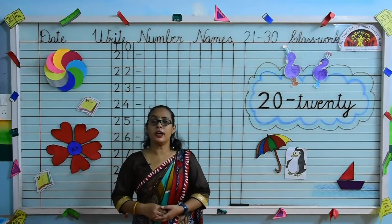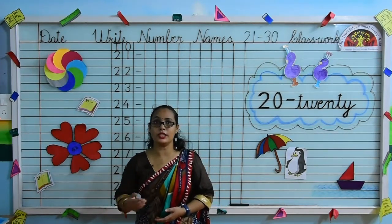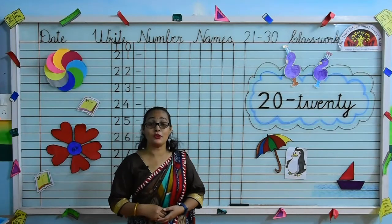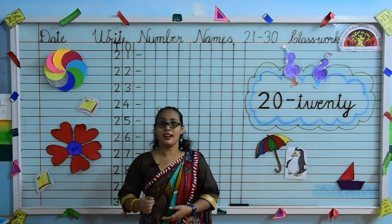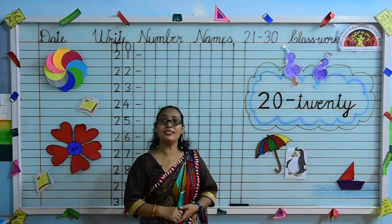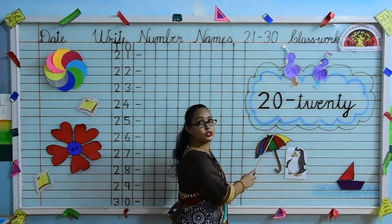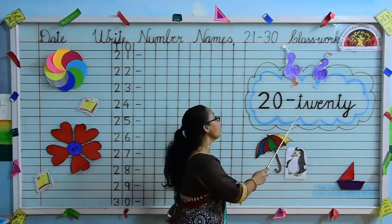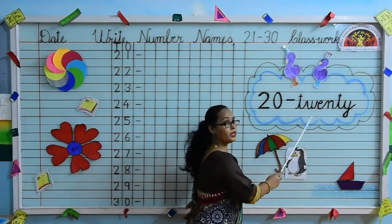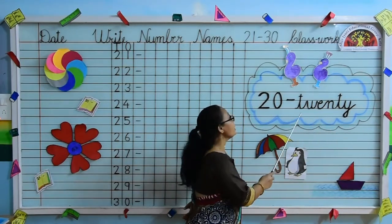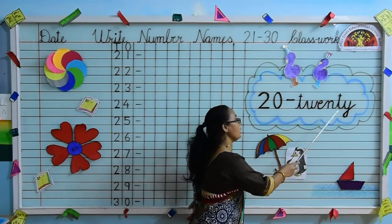Kids, in earlier class we have done number names 1 to 20. Kids, do you remember what is the spelling of 20? Okay, let's revise with me. T-W-E-N-T-Y, 20. T-W-E-N-T-Y, 20.